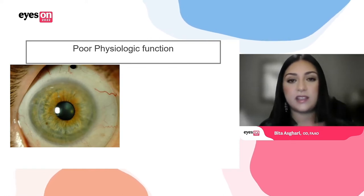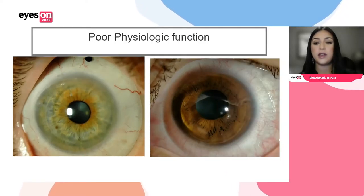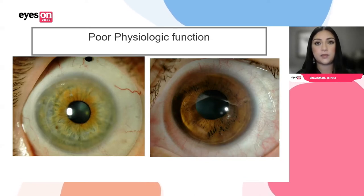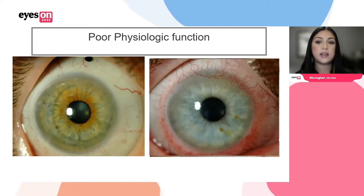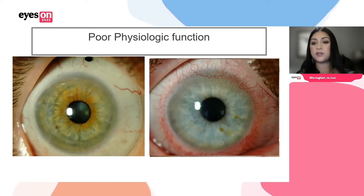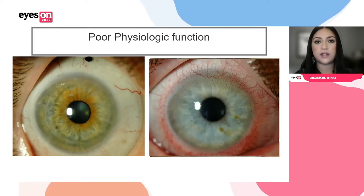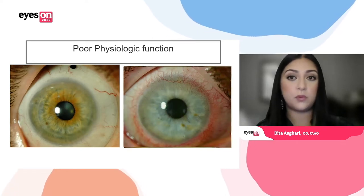If you do remove the lens and find a significant impression ring — where the lens was fitting so tightly it looks like the lens is still on the eye — along with rebound hyperemia, that indicates poor physiologic function even if the patient had no complaints. This was actually a real patient I saw in clinic who was wearing a lens fit elsewhere and had no complaints at all. They said, 'I don't even know why I'm here, my doctor sent me over and said I need to get refit.' But at this point — with this level of corneal neovascularization and undoubtedly some limbal stem cell dysfunction — this is not sustainable. This is poor physiologic function.